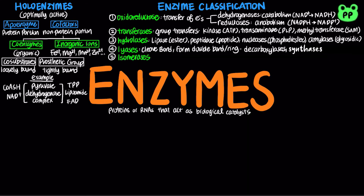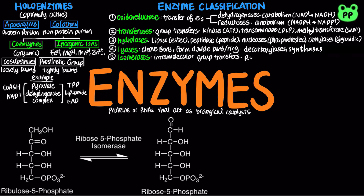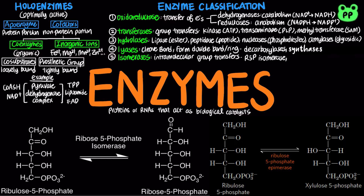Isomerases catalyze intramolecular group transfers. Examples include ribose 5-phosphate isomerase from the pentose phosphate pathway, which catalyzes the interconversion between ribose 5-phosphate and ribulose 5-phosphate, and ribulose 5-phosphate epimerase, which catalyzes the interconversion between ribulose 5-phosphate and xylulose 5-phosphate. Both enzymes are part of the pentose phosphate pathway, abbreviated as PPP.